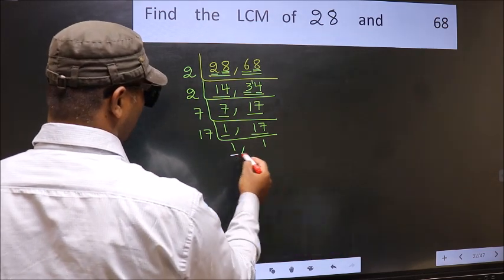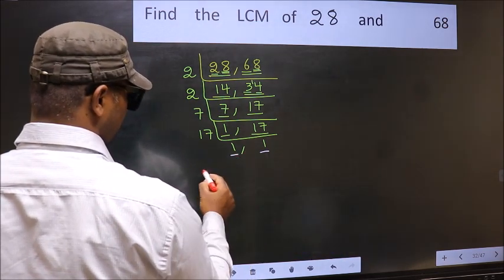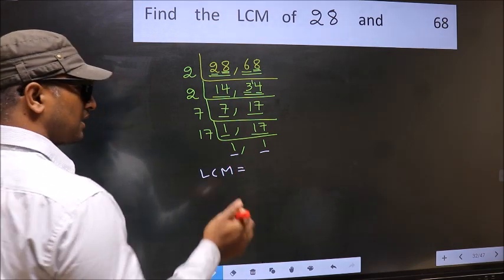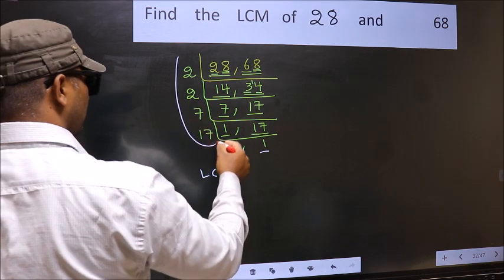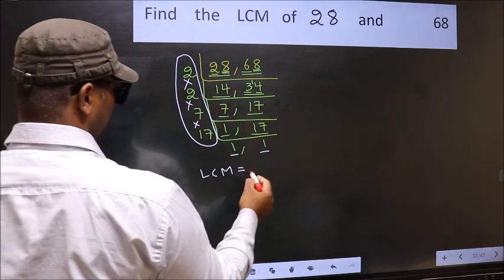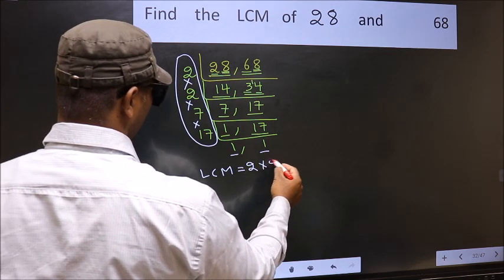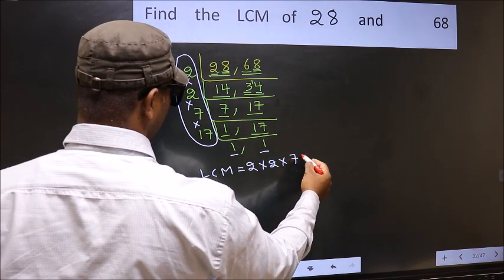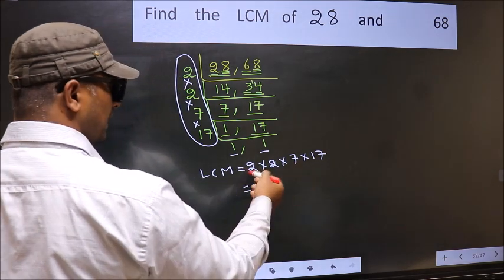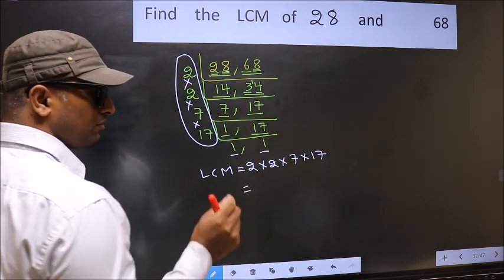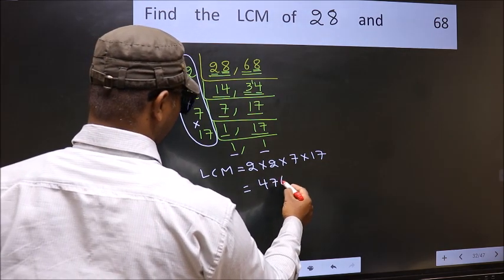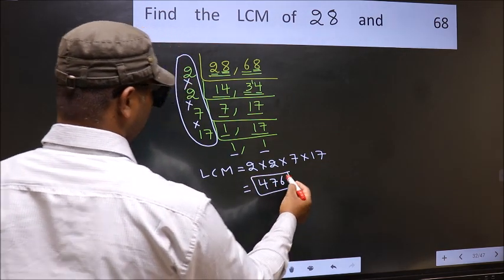So we got 1 in both the places. So our LCM is the product of these numbers, that is 2 into 2 into 7 into 17. When we multiply these numbers we get 476. This is our LCM.